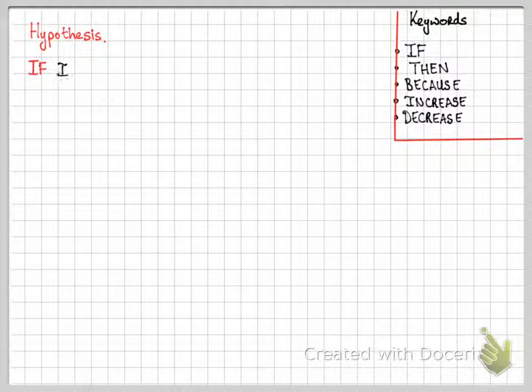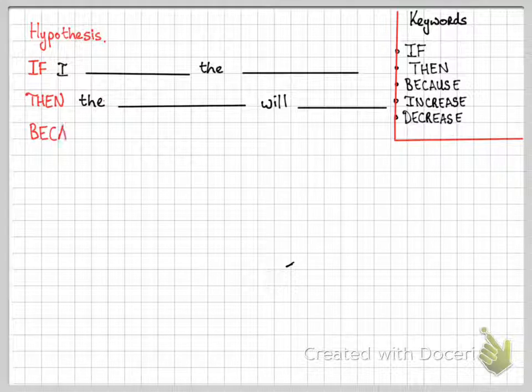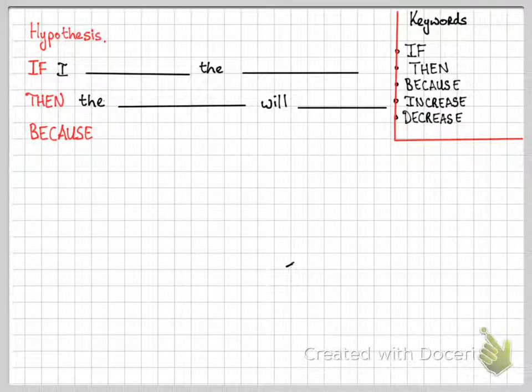The hypothesis also can take the following structure. As you can see. You can clearly see that if, then, and because are very evident in the hypothesis.